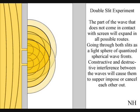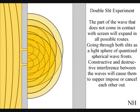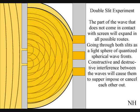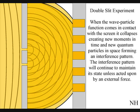Constructive and destructive interference between the waves will cause them to superimpose or cancel each other out. When this wave-particle function comes in contact with the screen, it will collapse, creating moments in time and quantum particles in the shape of an interference pattern.